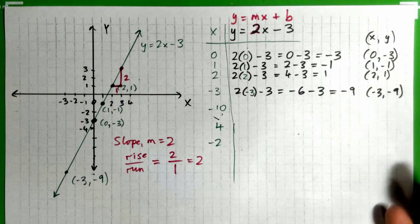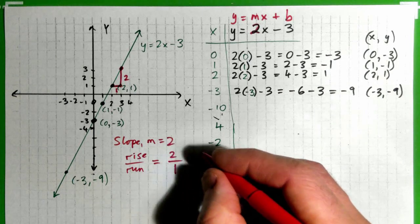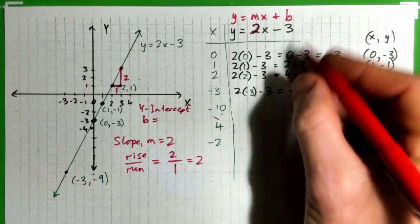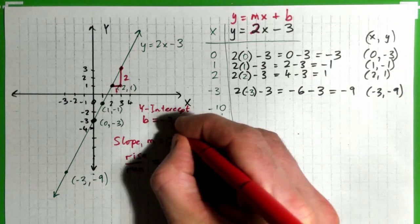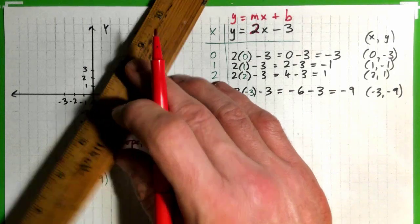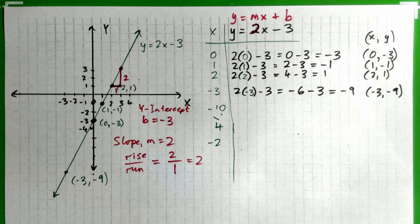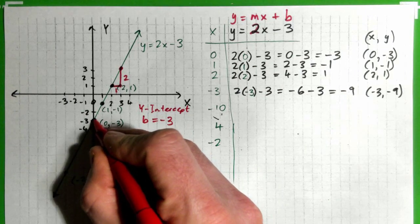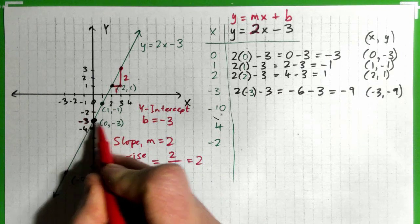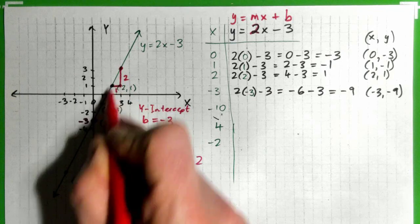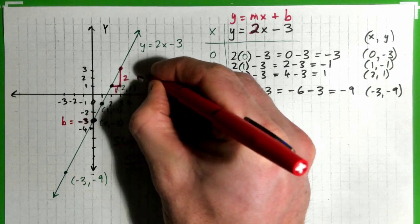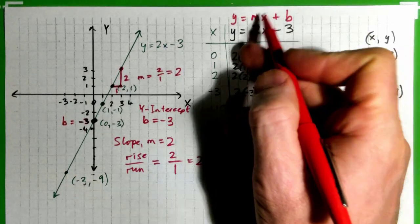The y-intercept b is negative 3. You can see that from the equation. From the graph, where does the line hit the y-axis? It hits at the point (0, -3), when the y-value is negative 3. So the y-intercept is negative 3. The slope m is 2 (rise over run = 2/1 = 2), and you can see both from the equation and from the graph.